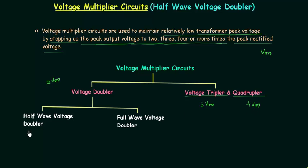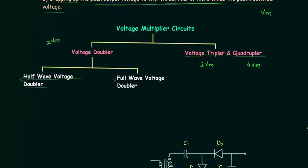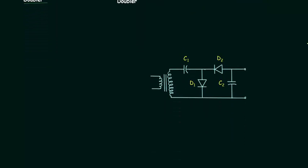There are two different types of voltage doubler circuits: the first one is half wave voltage doubler and the second one is full wave voltage doubler. In this lecture we will deal with the half wave voltage doubler, and in the next lecture we will deal with the full wave voltage doubler. So let's move to the half wave voltage doubler circuit.